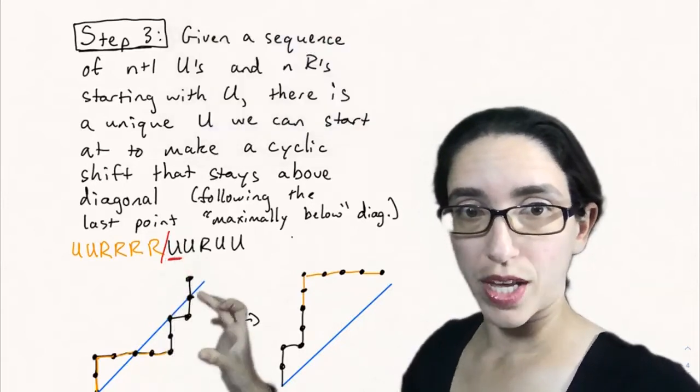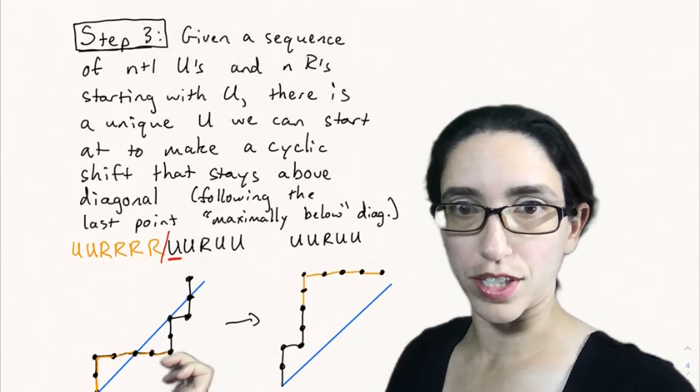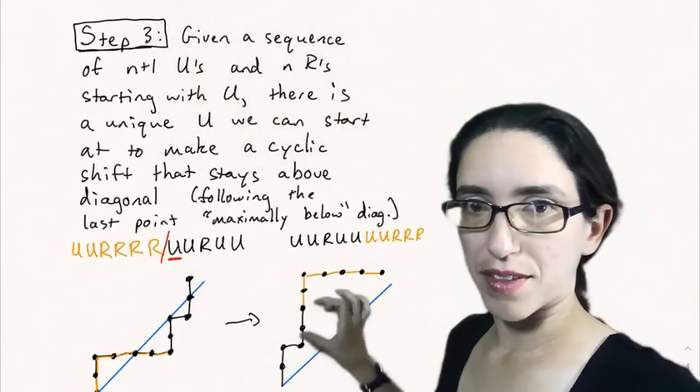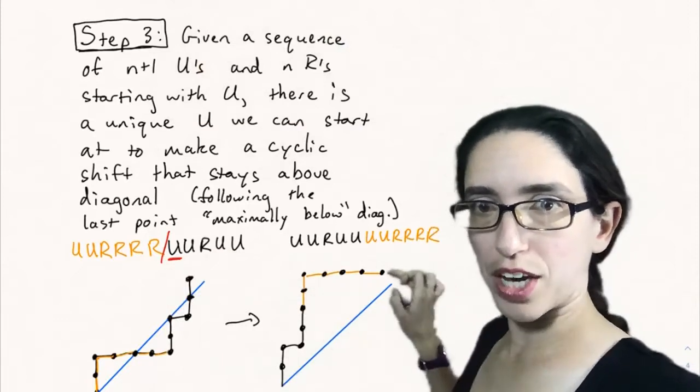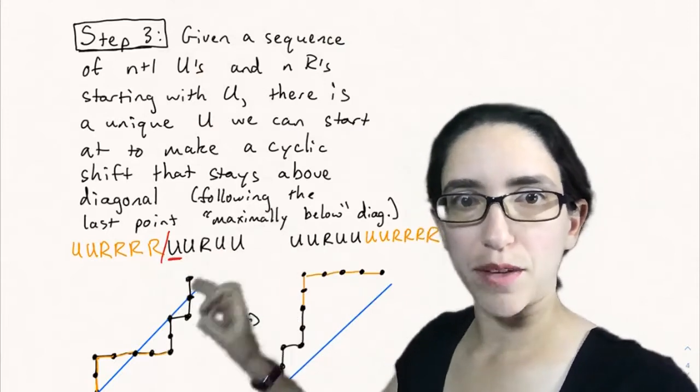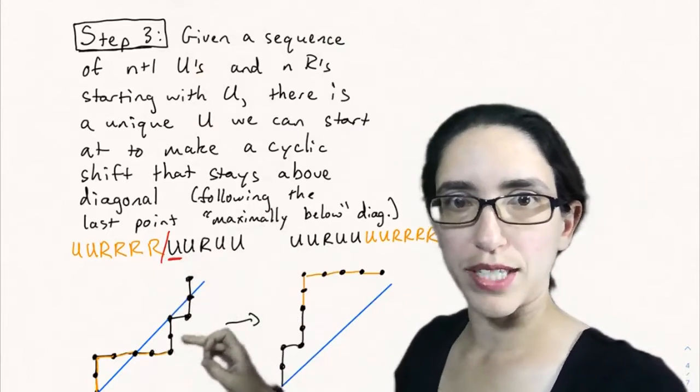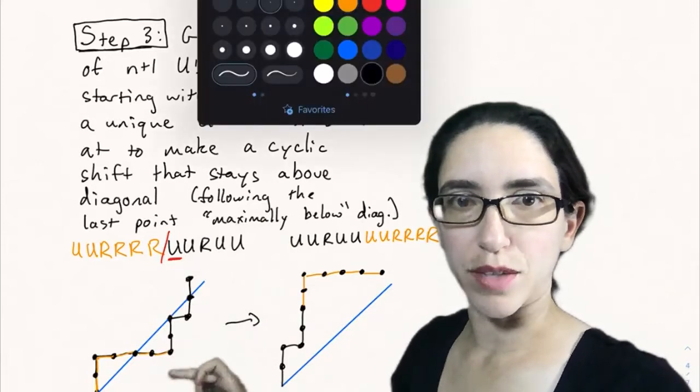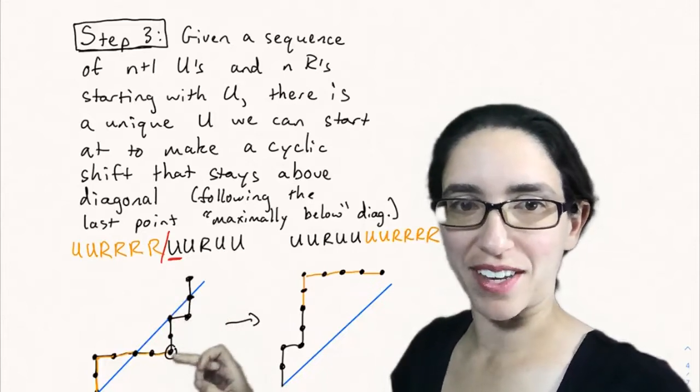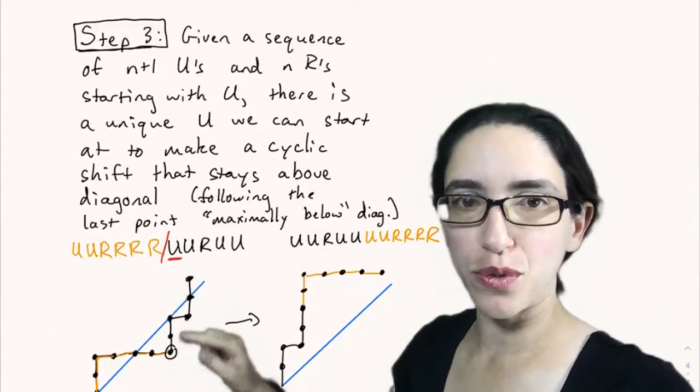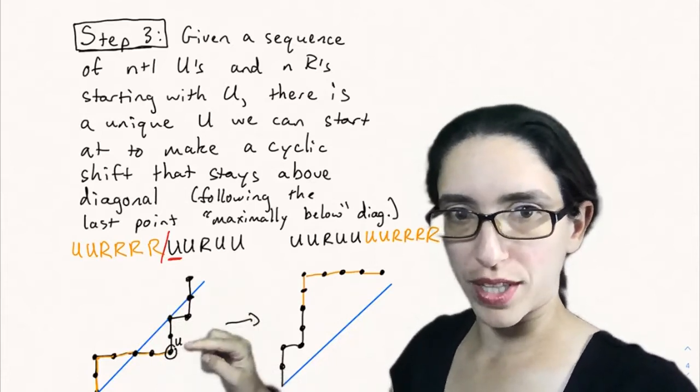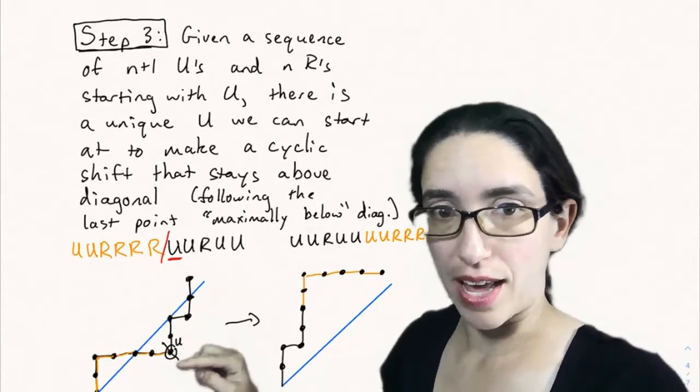If I cut it at this U, I'm taking this black tail and this orange beginning path and switching them. What I get is the black path starts and then I put the orange path on top and that one stays above the diagonal. So how do we find that U? We actually pick the U to be the up step that's just after the last maximally low point that's maximally below the diagonal. This is the point that's two steps below the diagonal. This point is only one step below the diagonal. But you look for the point that's most below the diagonal and the top one of those.